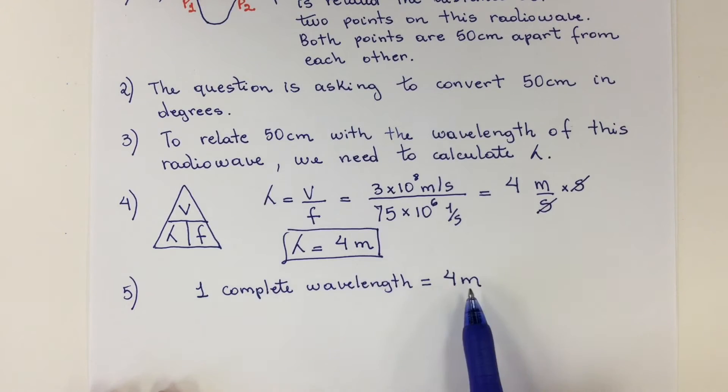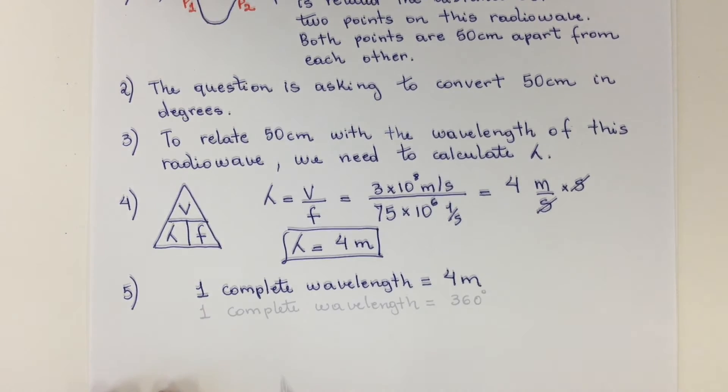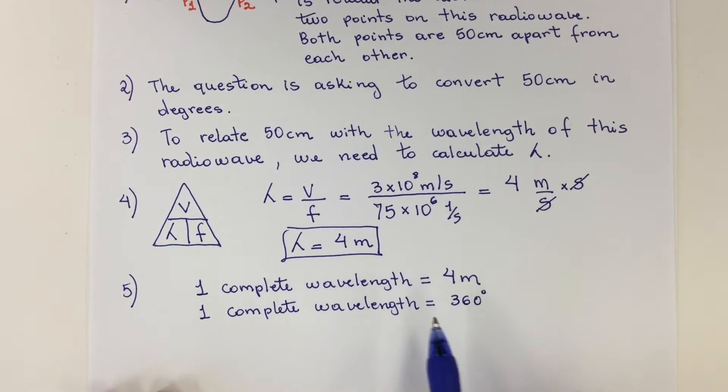One complete wavelength is equal to 4 meters, and one complete wavelength is also equal to 360 degrees.